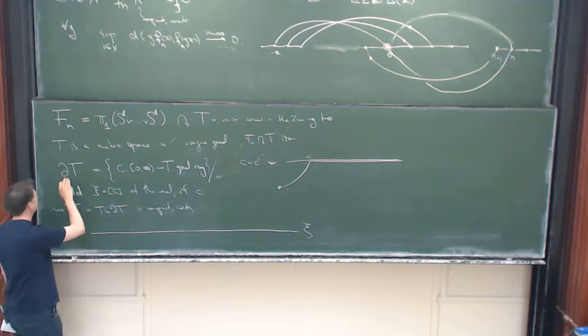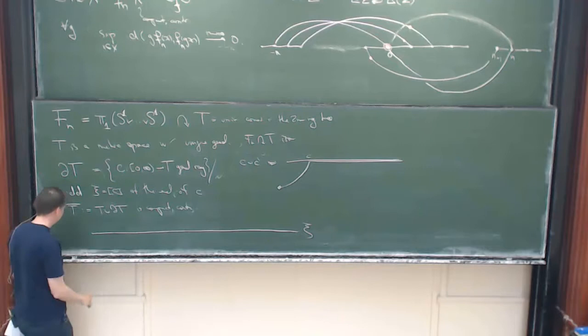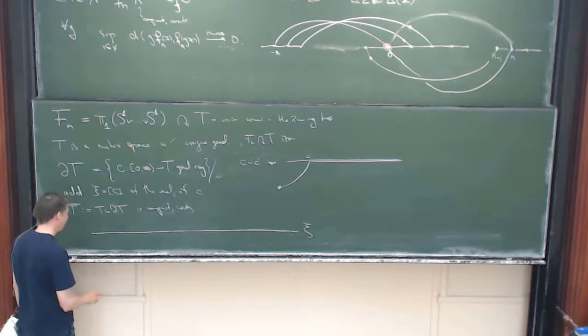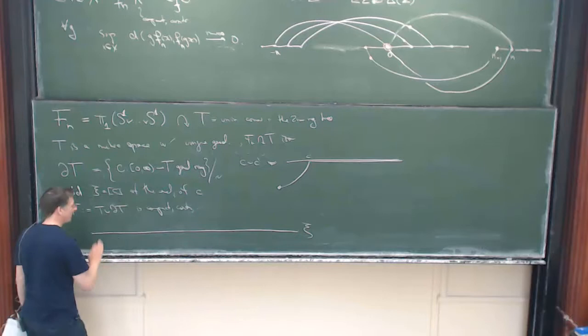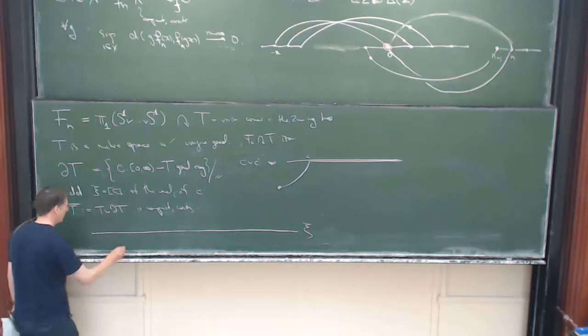The boundary as a subset is a Cantor set. I wanted to describe to you a sequence in here that converges to a boundary point to give you a feeling for the topology. What you could do is you pick points x_1 and connect them to the basepoint here by a geodesic. The condition is that if we do this, we hit the one geodesic towards xi later and later—or we leave it later and later, starting from v_0.